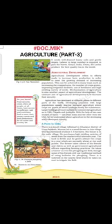He purchases high yielding varieties of seeds from the market every alternate year. The land is fertile and he grows at least two crops in a year, which are normally wheat or rice and pulses. The farmer takes advice from his friends and elders, as well as government agricultural officers, regarding farming practices.